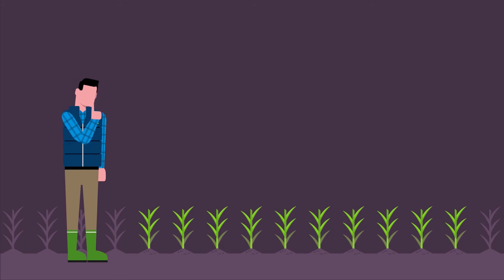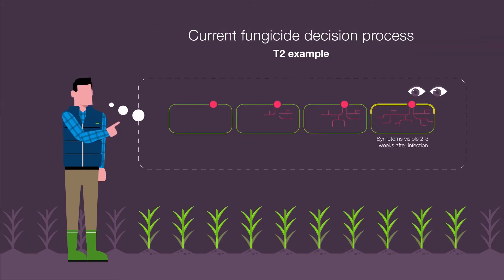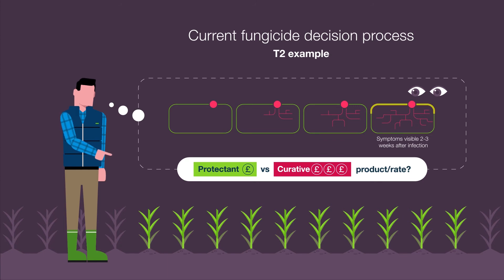When we are making fungicide decisions in the spring, we can consider all of these factors. However, we can't see how those factors have actually influenced disease levels, particularly in the upper leaves. This makes it difficult to make the right decision between a more protectant or more curative product choice and rate.